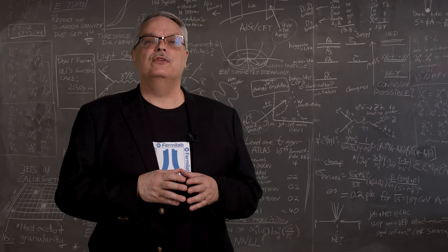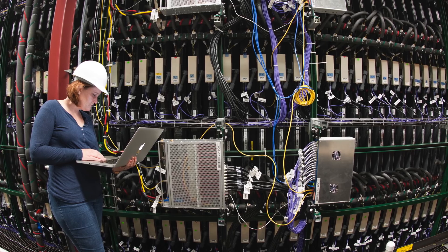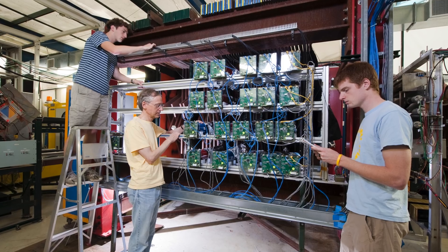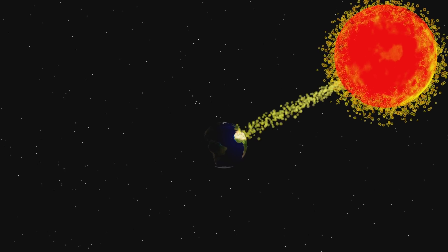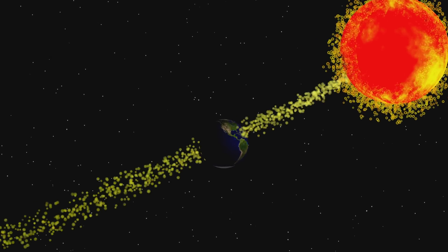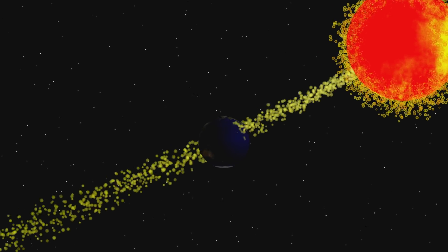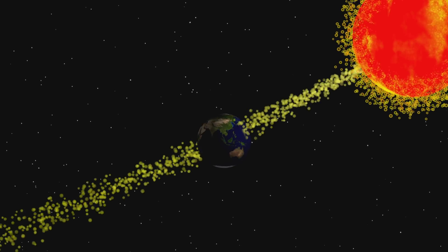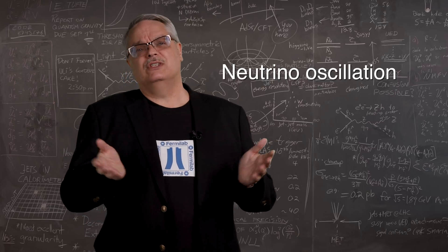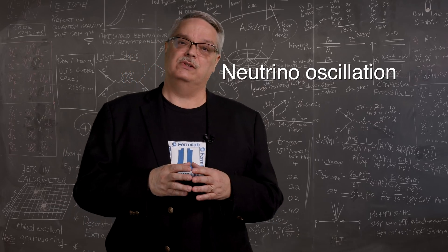About a decade ago, the decision was made for Fermilab to build a world-leading infrastructure to study the behavior of neutrinos. Neutrinos are subatomic ghosts that interact rarely with matter and, perhaps even more amazingly, they are particles that can change their identity. The term physicists use for this behavior is neutrino oscillation.